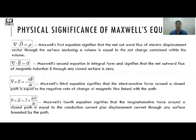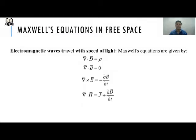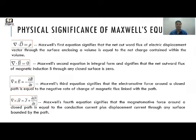The physical significance of Maxwell's equations. The first equation, which is Gauss's law of electrostatics, signifies that the net outward flux of the electric displacement vector through the surface enclosing a volume is equal to the net charge contained within the volume.